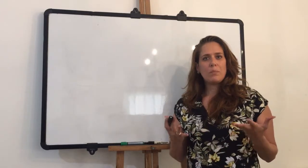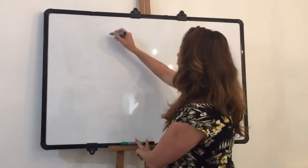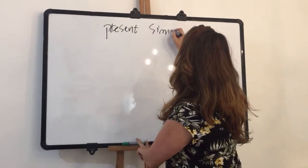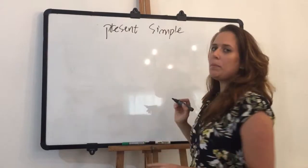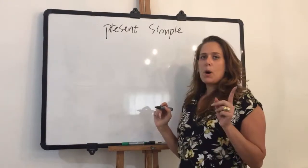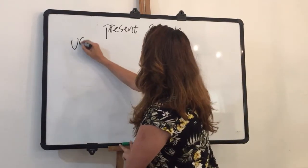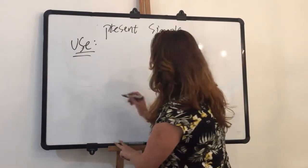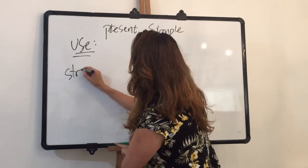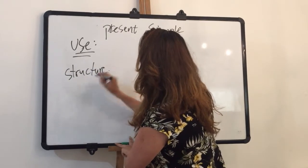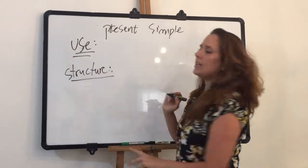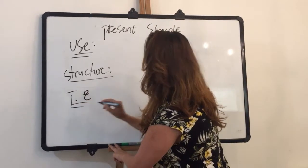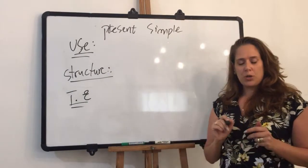What is the present simple? When we talk about tenses, I always like to divide it into three parts. The first part is when we use it. The second part is the structure. And the third part is my time expression.